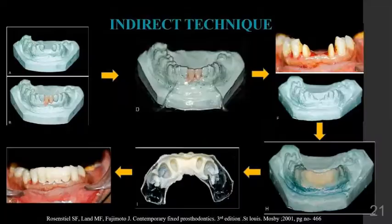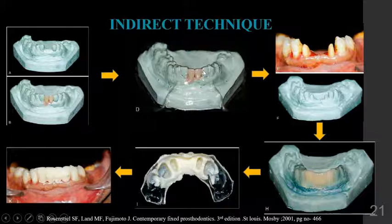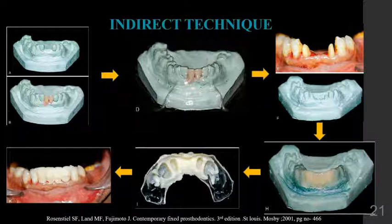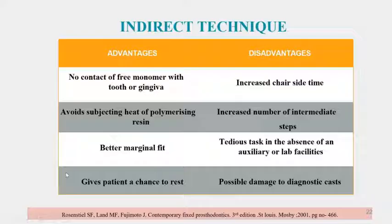For the indirect technique, an impression is made and a diagnostic cast is poured. A wax-up can be done or teeth arranged, and a matrix with vacuum-form material or putty index is made. After tooth preparation, another cast is poured, the matrix is fitted on the cast, the cast is lubricated with separating media, the material is mixed, and the matrix is placed on the cast. Once polymerization takes place and the material is set, it is removed, polished, finished, and cemented in the patient's mouth.